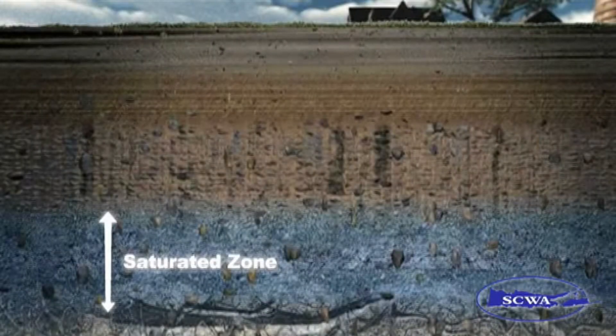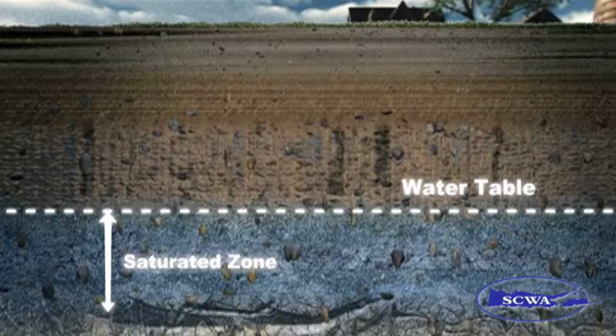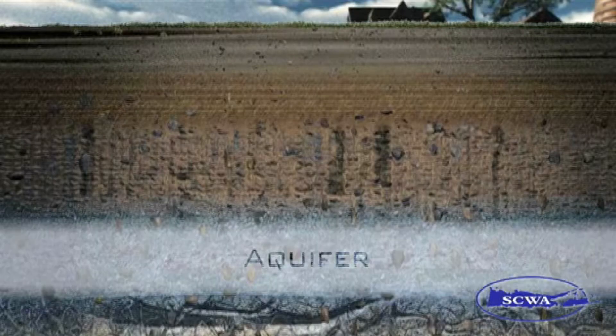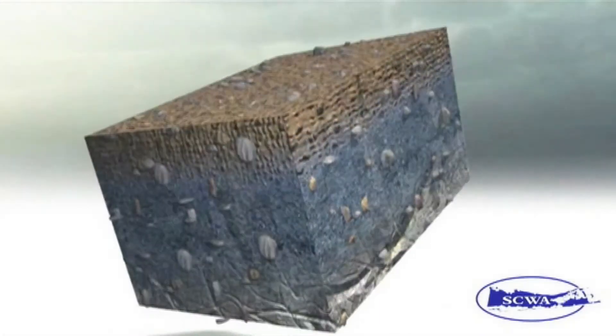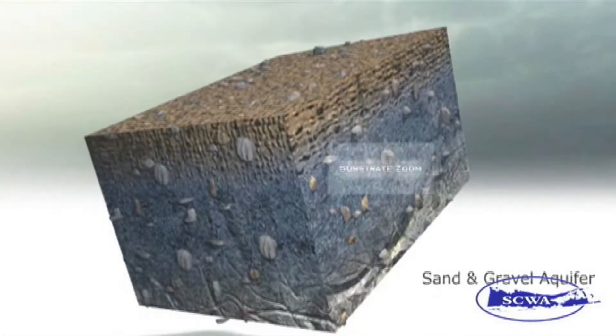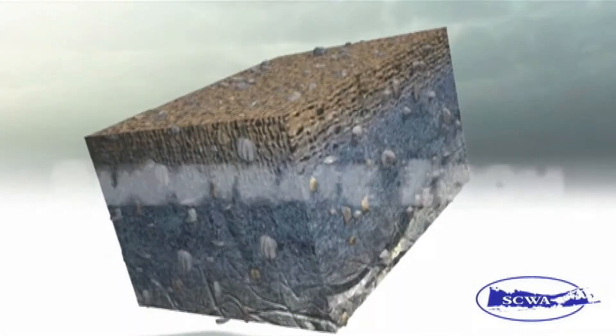On Long Island, approximately 800 billion gallons of precipitation fall every year. Aquifers are comprised of sand and gravel and act like large underground porous sponges that store ground water.